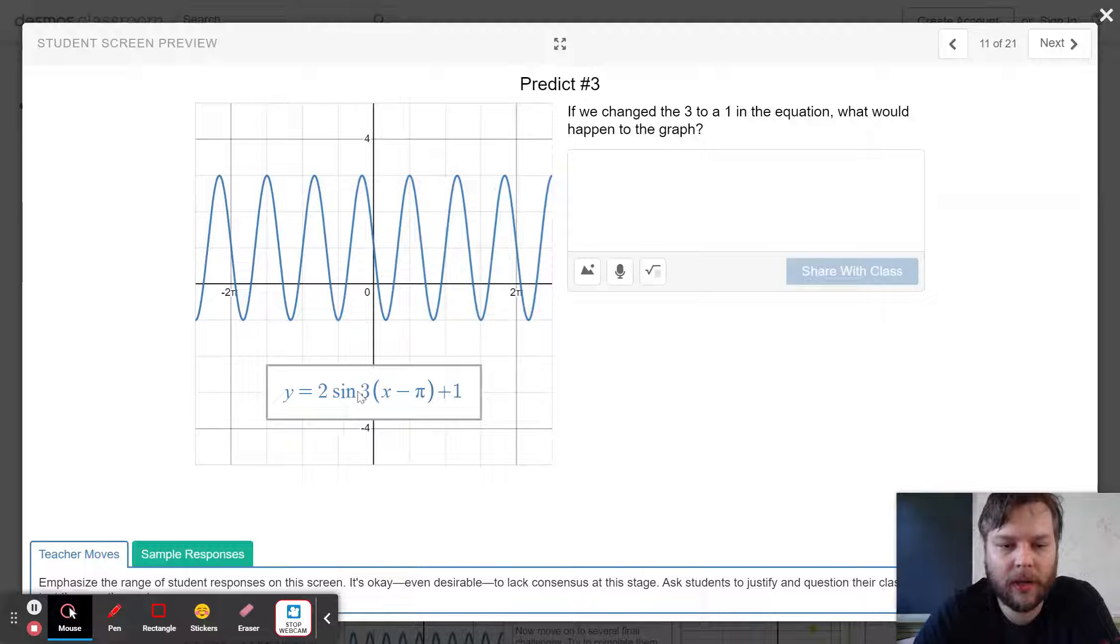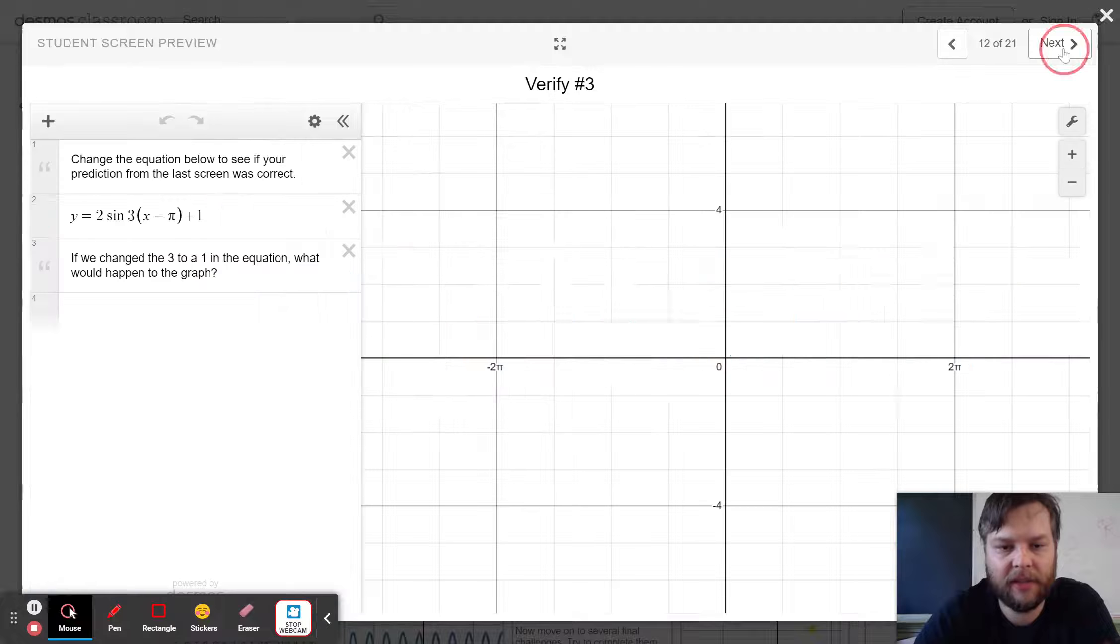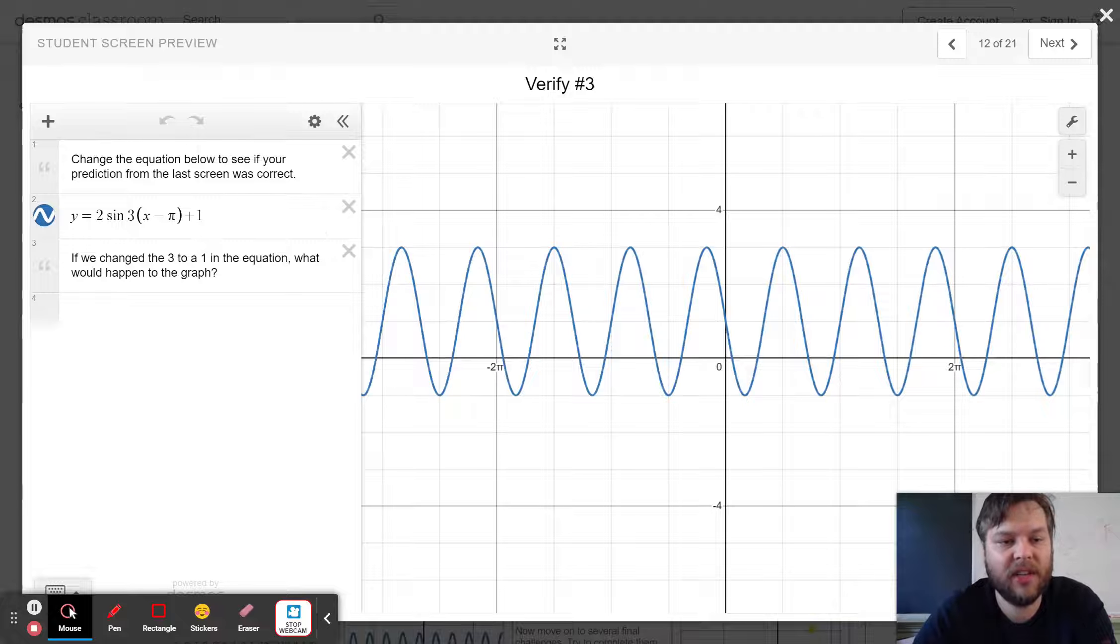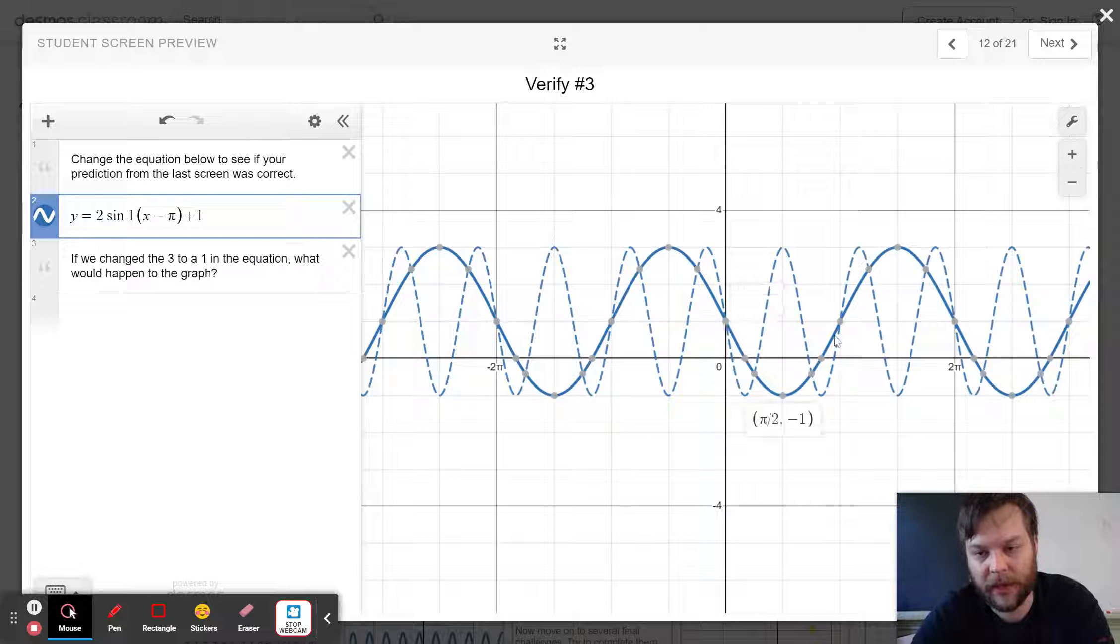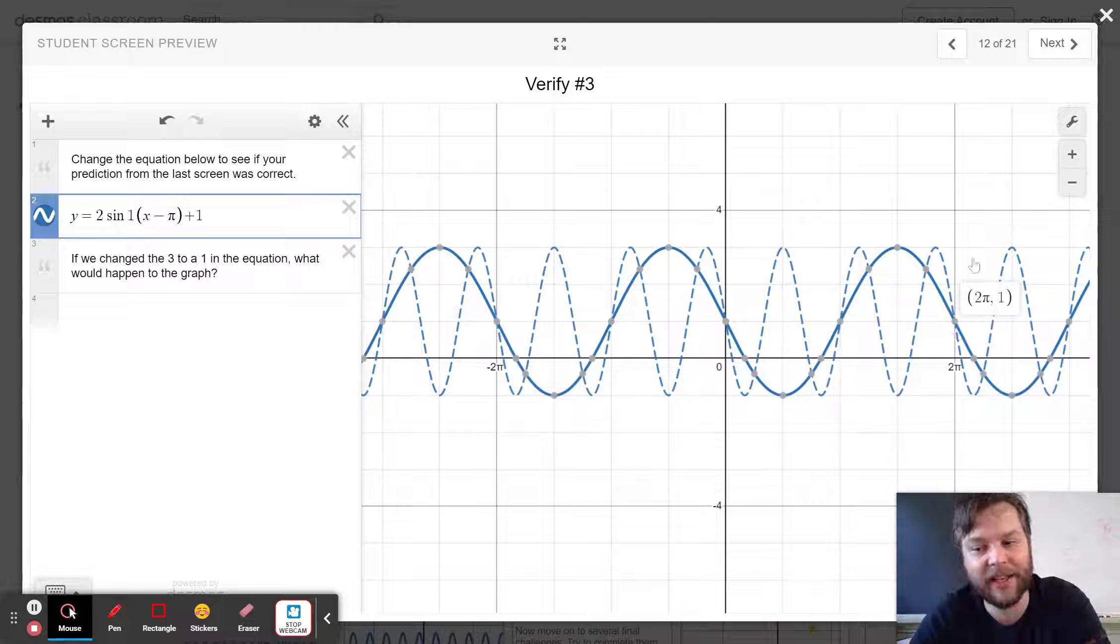Changing the 3 to a 1 would change the frequency. Right here, we've got a frequency of three, which means it does three full revolutions by the time it gets to 2 pi. If I change it to 1, now it's only going to do one revolution by the time it gets to 2 pi. You can trace it out yourself. Middle, bottom, middle, top, middle, versus the dotted line does that three times.